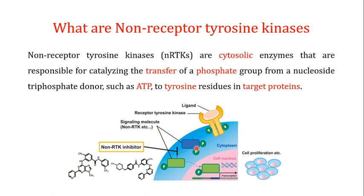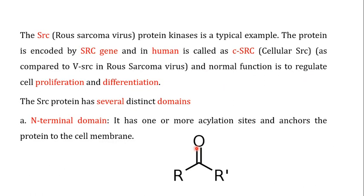A famous example of a non-receptor tyrosine kinase is the SRC protein kinase, originally identified as the Rous sarcoma virus protein kinase. In humans, SRC is encoded by the SRC gene, referred to as CSRC (cellular SRC), as opposed to the viral version VSRC found in the Rous sarcoma virus. The normal cellular function of the SRC protein is to regulate proliferation and differentiation.